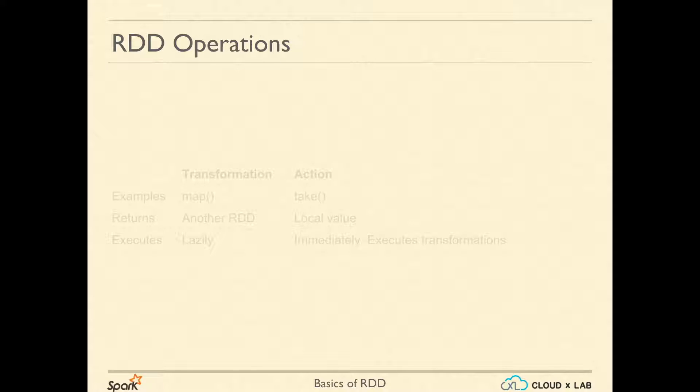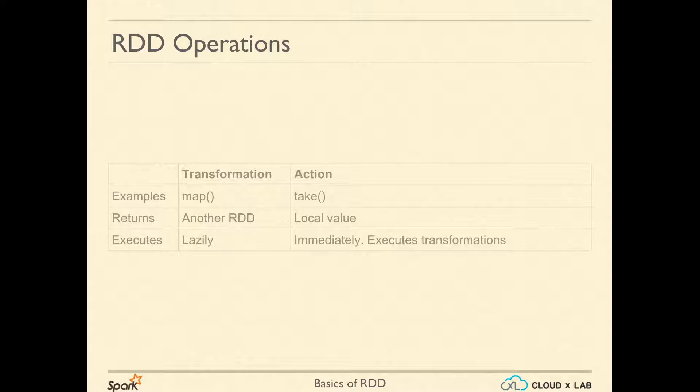Did you notice that map returned another RDD quickly while take took some time and actually did something? The reason is a transformation such as map does not get executed instantaneously.